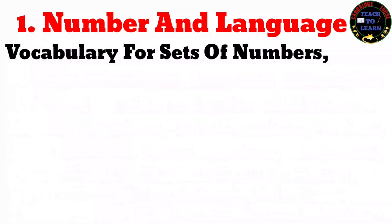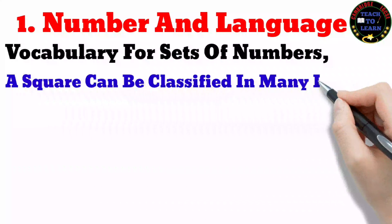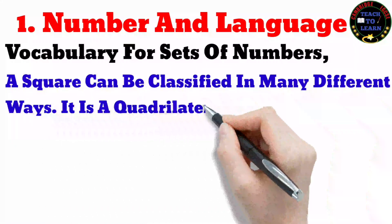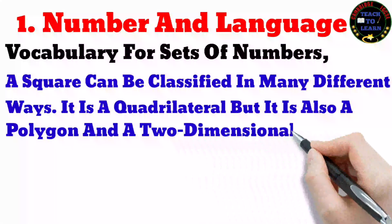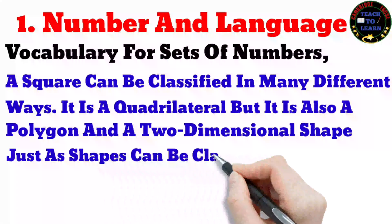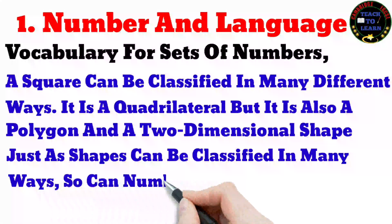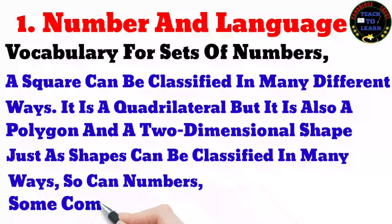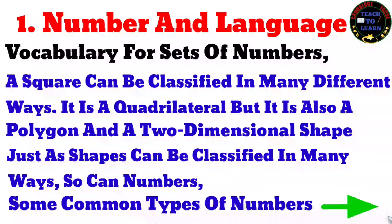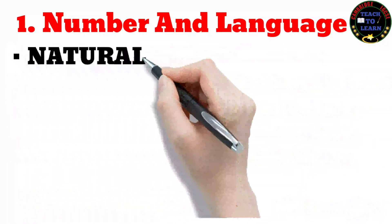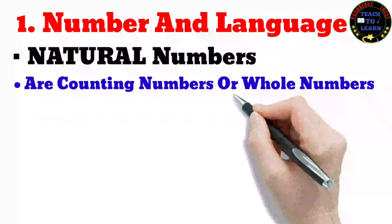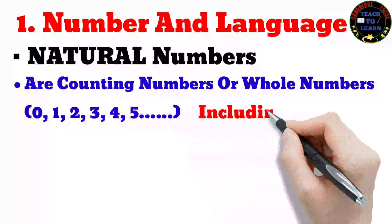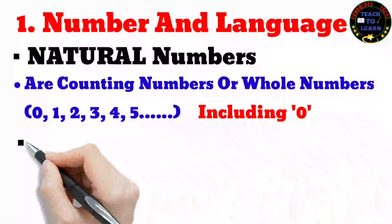Vocabulary for sets of numbers: a square can be classified in many different ways — it is a quadrilateral, but it is also a polygon and a two-dimensional shape. Just as shapes can be classified in many ways, numbers can also be classified in many ways. Some common types of numbers are shown ahead.